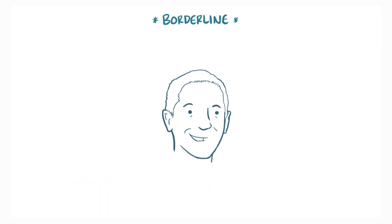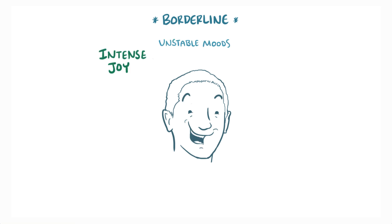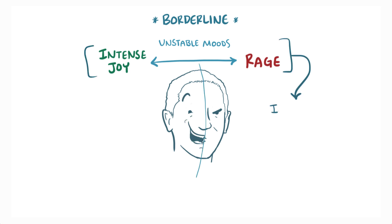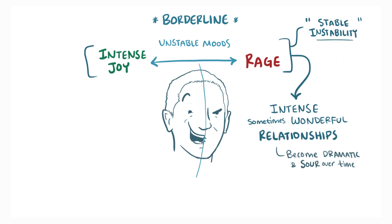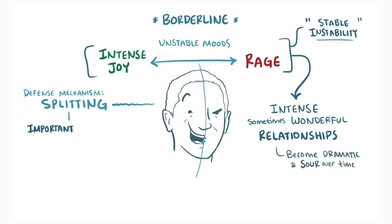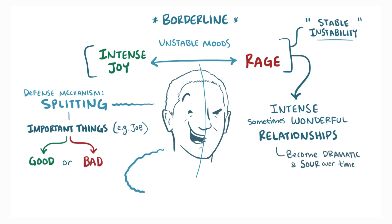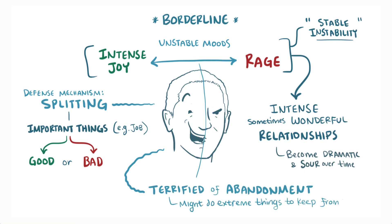Next up is Borderline Personality Disorder, which is where individuals have unstable moods. They go from intense joy one minute to rage the next, and this leads to intense, sometimes wonderful relationships that generally become dramatic and sour over time. This pattern is sometimes called stable instability because the only consistent thing is instability. These people often use a defense mechanism called splitting, where people and important things, like a job, are seen as either completely good or completely bad. In addition, people with Borderline Personality Disorder are often terrified of abandonment and might even do extreme things like threaten suicide to keep someone from leaving them.